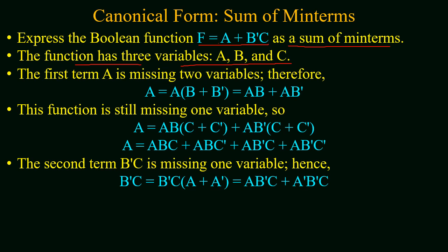Starting with the first term, 2 variables are missing. We first multiply a by (b + b'), which gives a·b + a·b'. Now the first term is expanded into a sum of 2 terms, but in both terms one variable is still missing. So the missing variable is introduced again by multiplying both terms with (c + c'). The first term is then expanded into 4 terms, with all variables present in each.